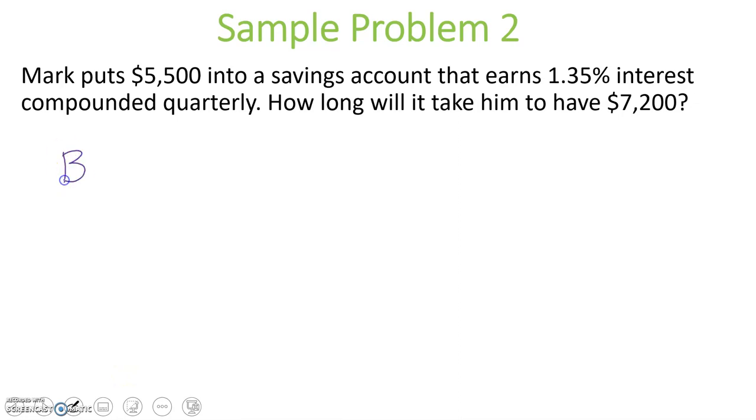So let's begin. When we solve this, we always begin with our generic formula. So our B equals P times 1 plus r over n to the power of nt.